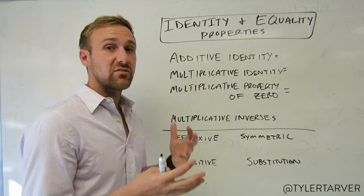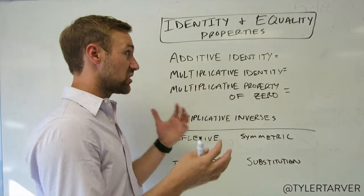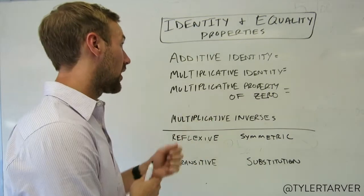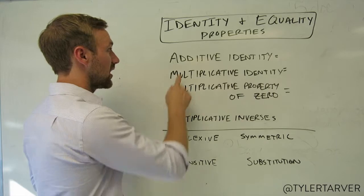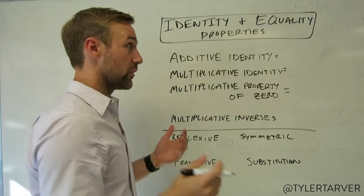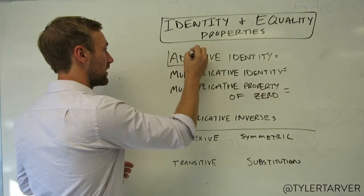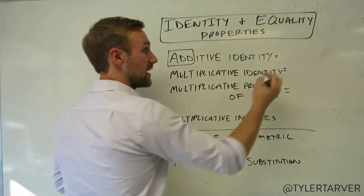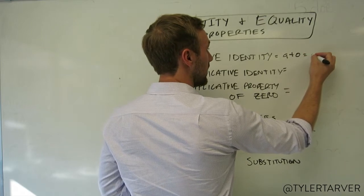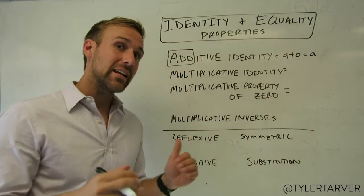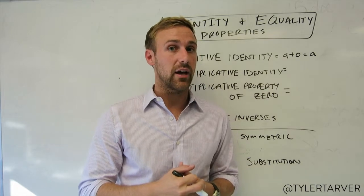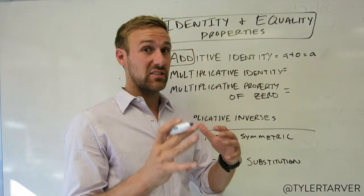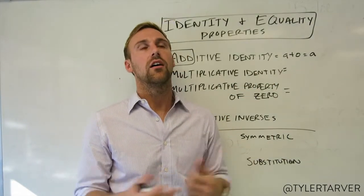These are just properties of math that are true — they are essentially facts. The additive identity: this sounds like addition, well guess what, you are adding. The property here with the additive identity is that a plus zero is going to equal that number. It means any number plus zero is still going to be itself, and this is something you've known for a long time.